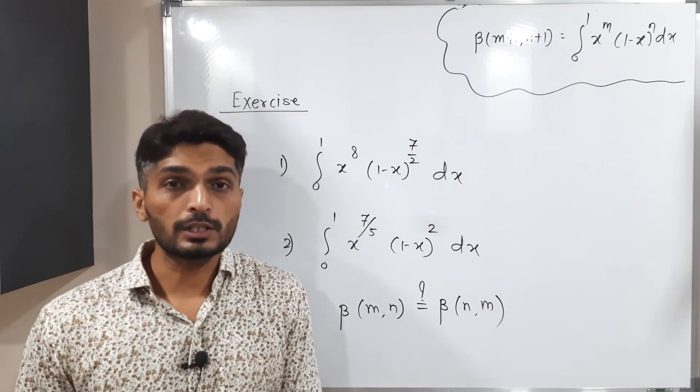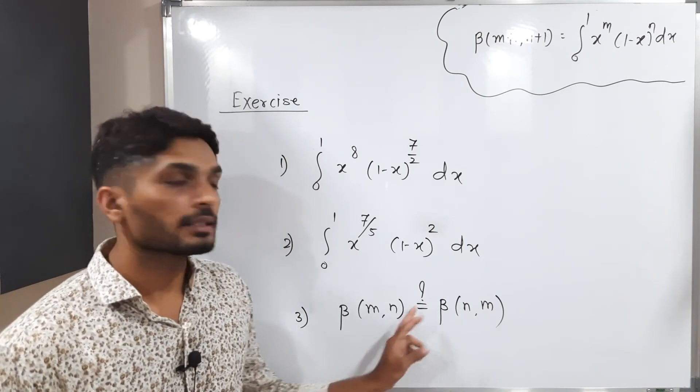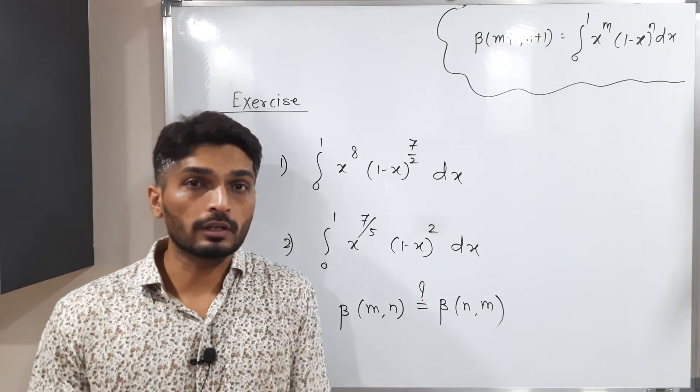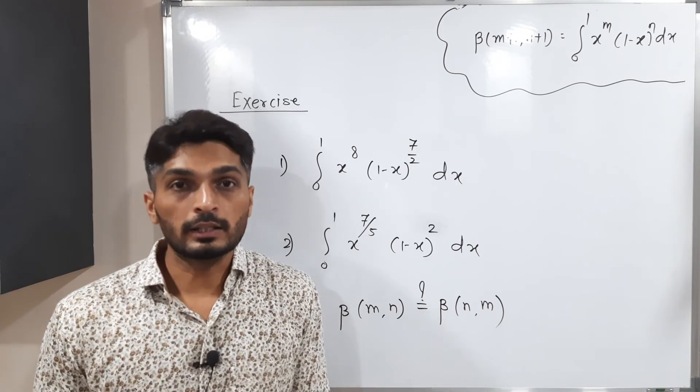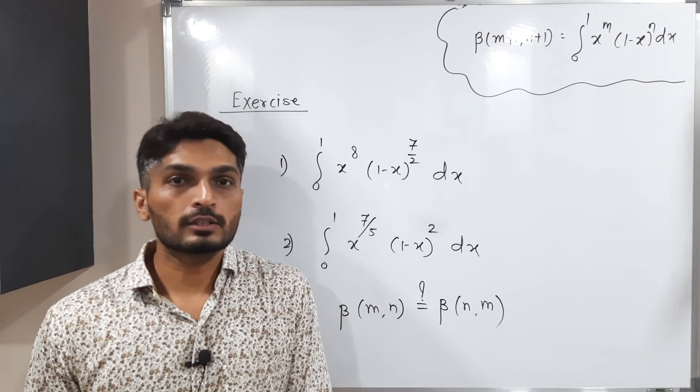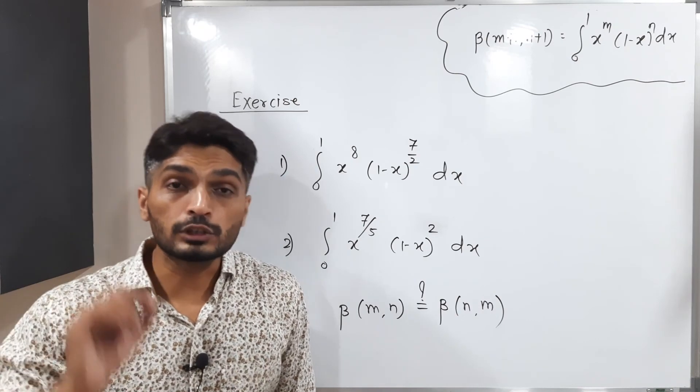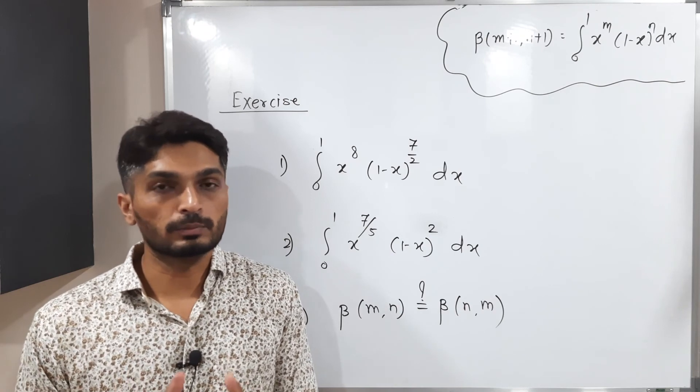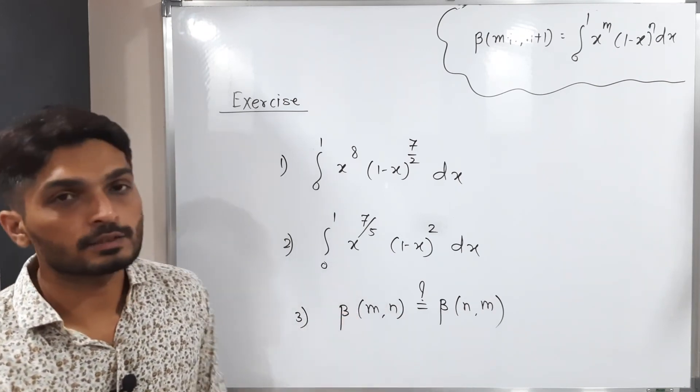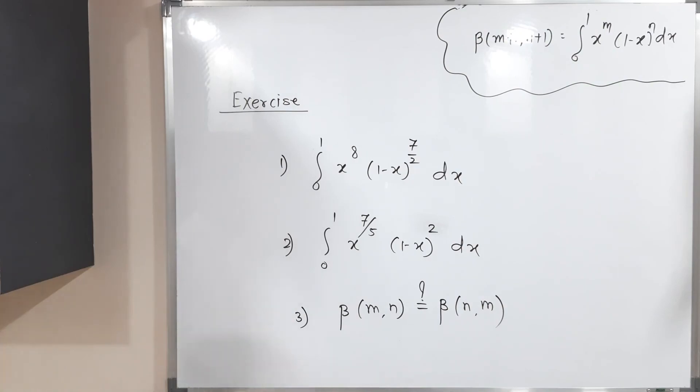The last one: beta of m, n is the same as beta of n, m. What do you think - yes or no? Are both equal or not equal? You have to tell me your answer with justification - sufficient justification should be there. These are three exercise problems for you. We'll stop here. Thank you, bye bye.